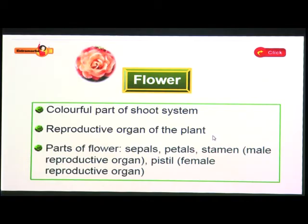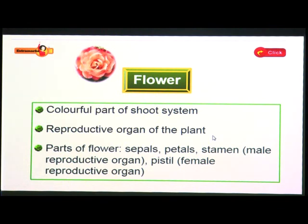Now we will learn about flowers. Flowers are the colourful part of the shoot system. They are formed on branches, so they come under the shoot system. The flower is also called the reproductive organ of the plant.